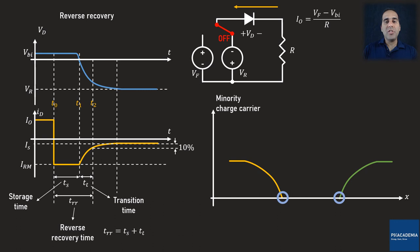The reverse recovery is an undesirable phenomenon, especially in switching power supplies. The power loss of the PN junction is the product of its voltage and current. During the reverse recovery time, since both the current and voltage are large values, the power loss is considerable. You may say that the reverse recovery time is very short and therefore we can neglect a pulse of power loss. However, if you imagine that this diode is engaged in a switching power supply with a switching frequency of 1 MHz, you'll soon notice that in one second the reverse recovery occurs 1 million times. This is something you do not want to overlook.